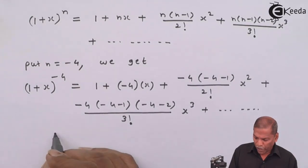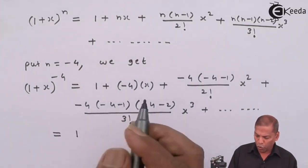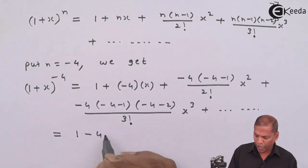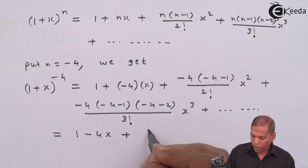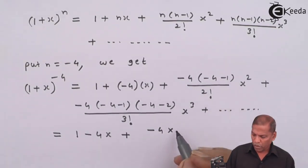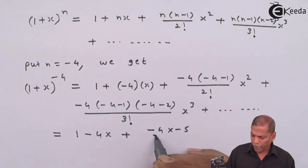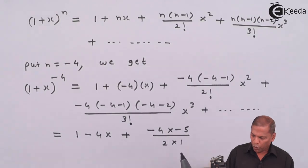So on simplifying further, we get 1, then plus times minus gives minus 4x, then plus in the numerator we have minus 4 times minus 4 minus 1 that gives minus 5 upon 2 factorial means 2, times x squared